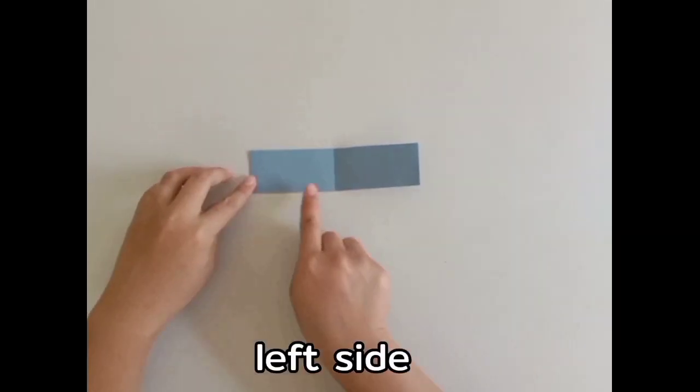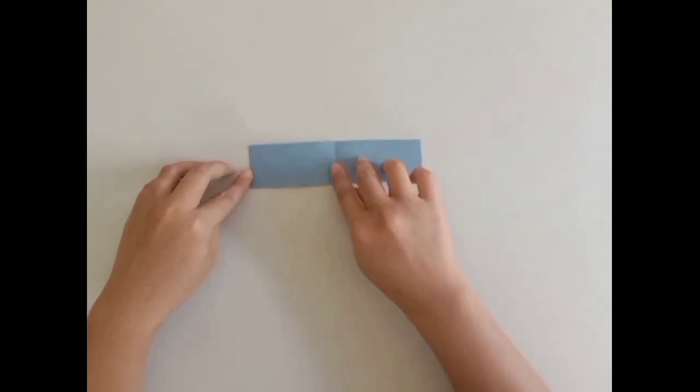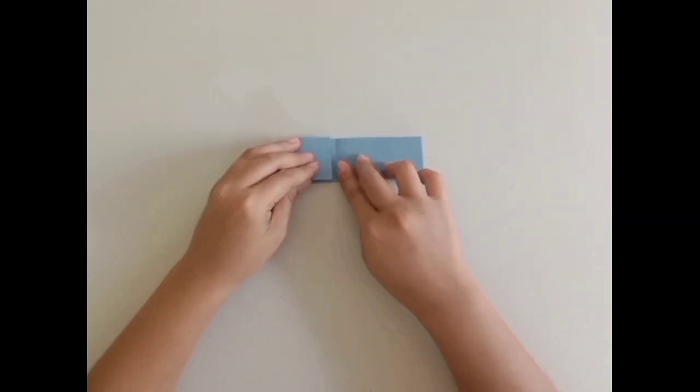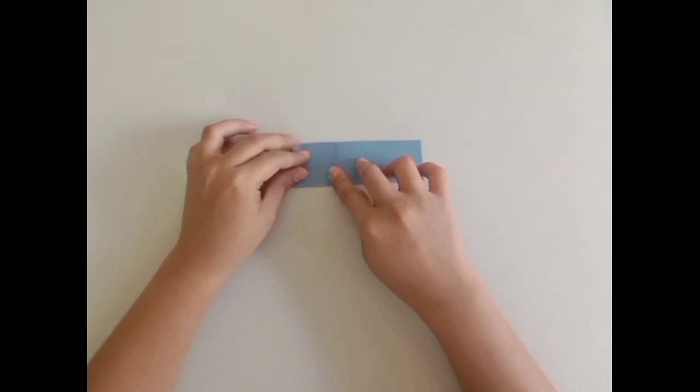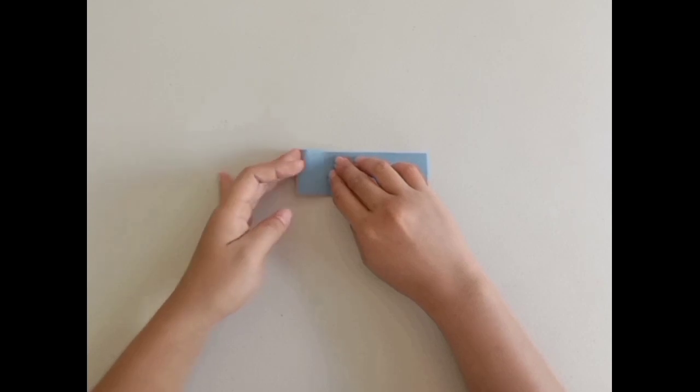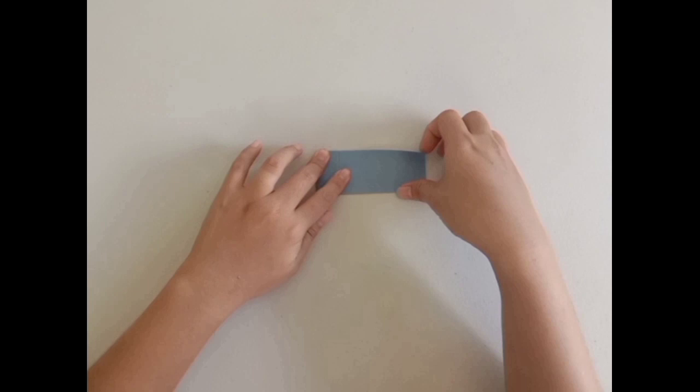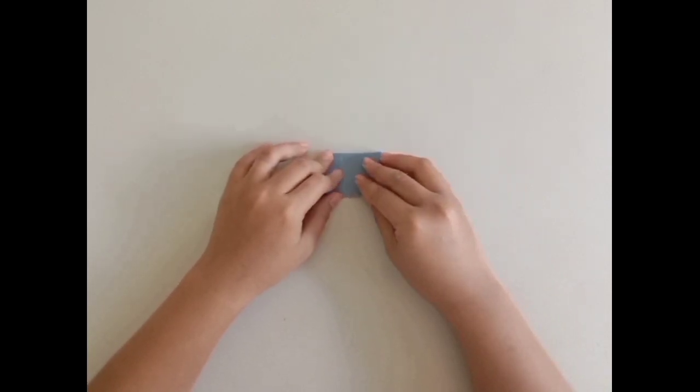We now have a left side and a right side. Fold the left side of the paper into half. Then fold it again into half. Do exactly the same on the right side of the paper.